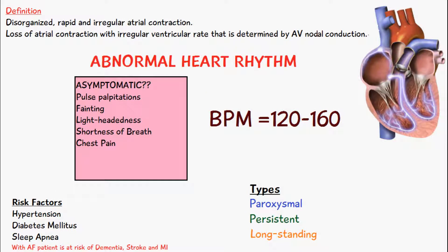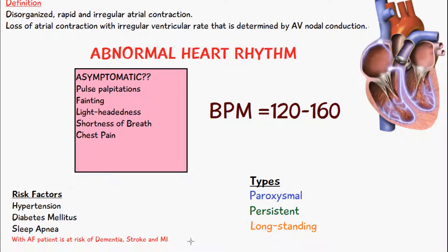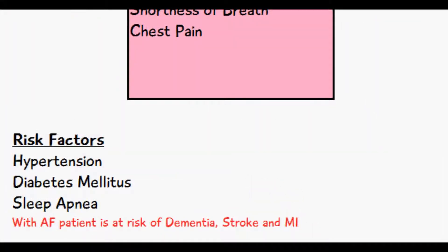This means other tissues aren't going to get as much oxygen. With atrial fibrillation, the patient is at risk of dementia, most likely due to ischemia or lack of oxygen, stroke, and even a myocardial infarction, where the heart muscles themselves are not getting enough oxygen.